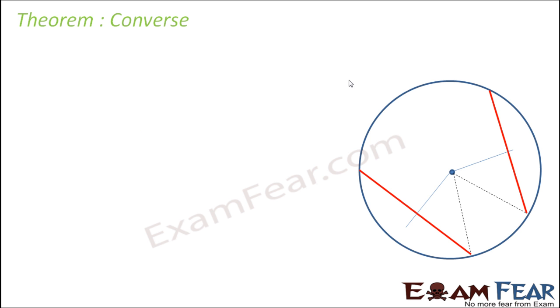The data here: AB and CD are two chords, O is the center, and P and Q are two points.